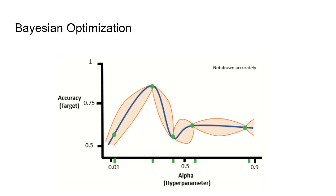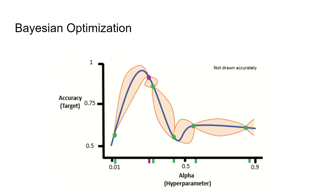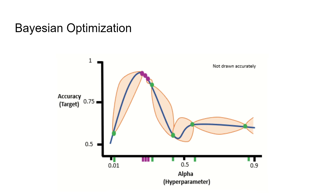From the acquisition function, we found that an alpha value close to 0.25 resulted in the highest accuracy. We then calculate the resulting accuracy and add that sample point, then train another Gaussian regressor to estimate the function with this new sample. We repeat this process for a certain number of iterations — using the acquisition function to find another sample point, adding it, and training a new Gaussian regressor. After two more iterations, we find that an alpha value of around 0.25 yields the highest accuracy. That's a high-level explanation of Bayesian optimisation.